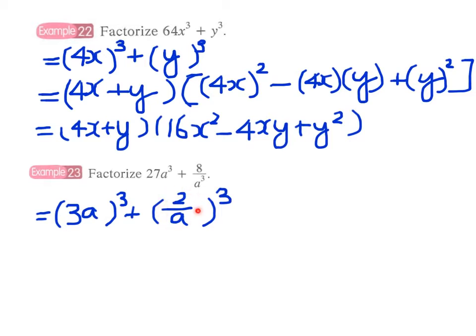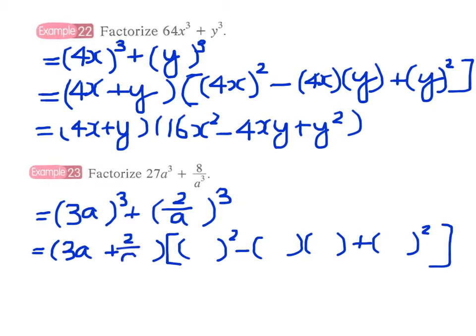And now we have a³ + b³, therefore we have (a + b) times (a² - ab + b²). Therefore, we can just fill in the numbers and symbols inside the brackets.